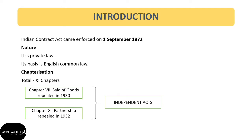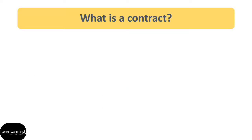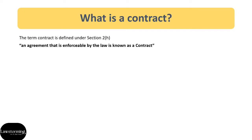So what is a contract? If we try to find the answer to this question in the text of the Indian Contract Act, we find that Section 2H defines the term contract. It says an agreement that is enforceable by law is known as a contract. So the important elements of this definition are agreement and enforceability. In simple words, contract equals agreement plus enforceability.